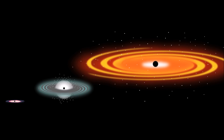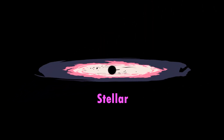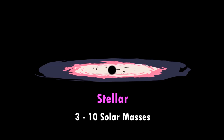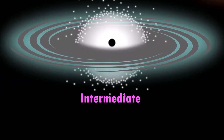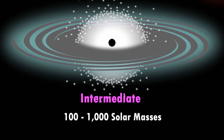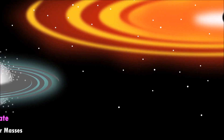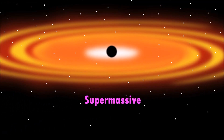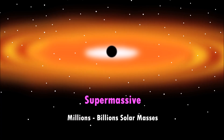There are three types of black holes. Stellar — stellar black holes are about 3 to 10 times the mass of the sun. Intermediate — intermediate black holes are approximately 100 to 1000 times the mass of the sun. And supermassive! Supermassive black holes are millions, even billions of times the mass of the sun.